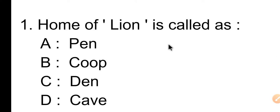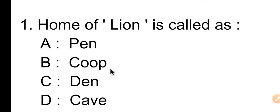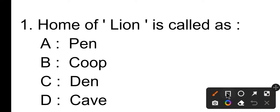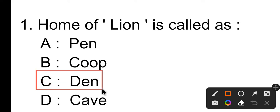Question number one: the home of lion is called as — Option A is pen, Option B is coop, Option C is den. The answer is Option C, a cave or den. Good idea.